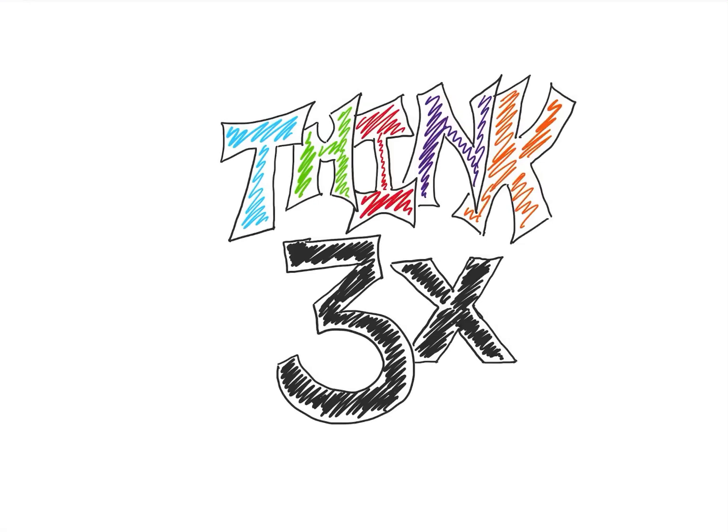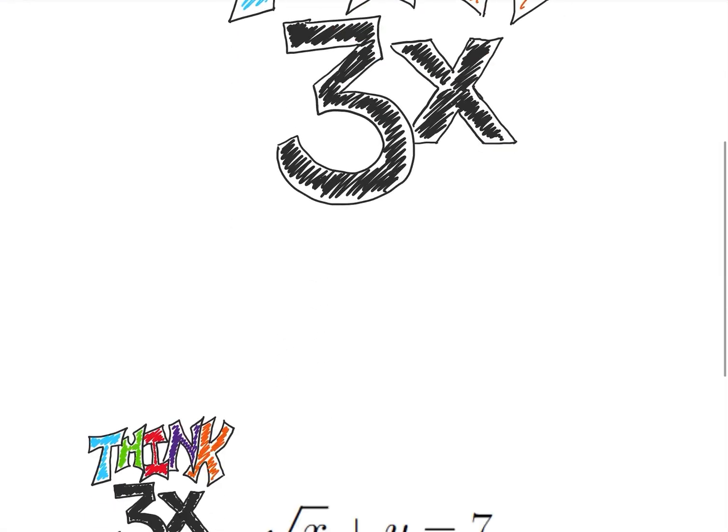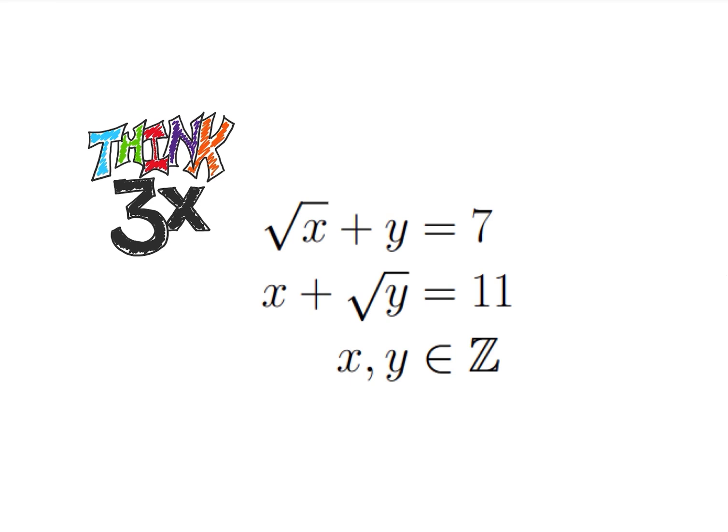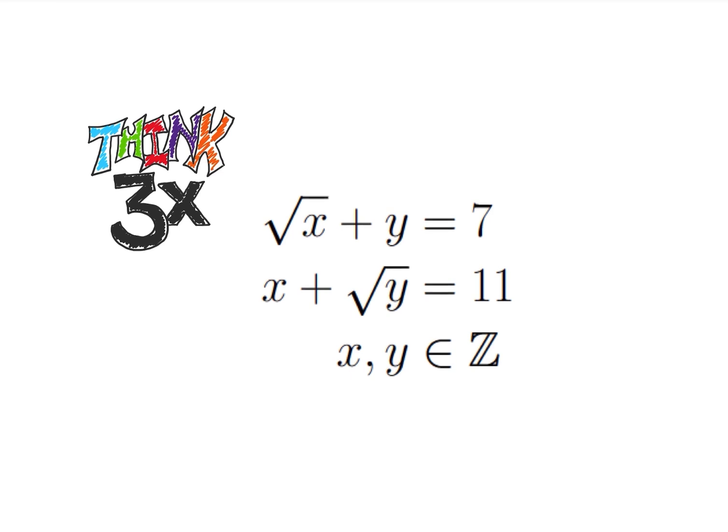Welcome back to Think Thrice Problem Solving. Today we're going to be solving a fun, number theory-ish problem. We have the square root of x plus y is 7, and x plus the square root of y is 11. x and y are both integers. You can take a few minutes and work on this on your own. If you think about it hard enough, you can probably just figure out the answer, but we're going to find it deliberately in a mathematical way.